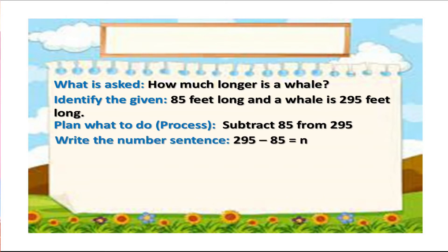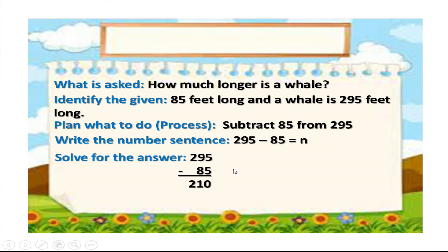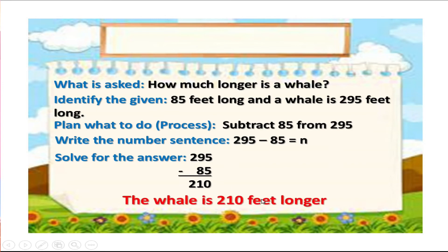Step 4: Write the number sentence — 295 minus 85 equals n, where n is the difference. Step 5: Solve for the answer. 295 minus 85: 5 minus 5 is equal to 0. Next, 9 minus 8 is equal to 1. Bring down 2. So, the answer is the whale is 210 feet longer.